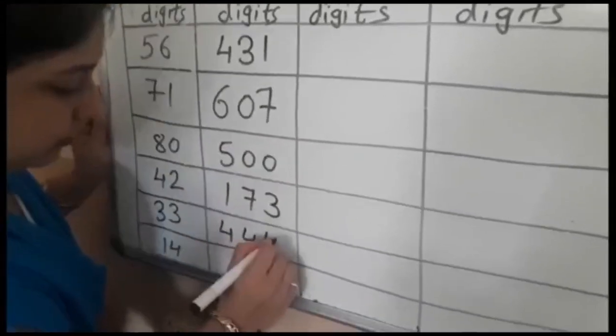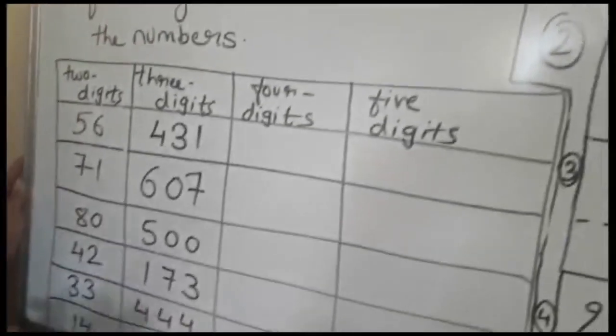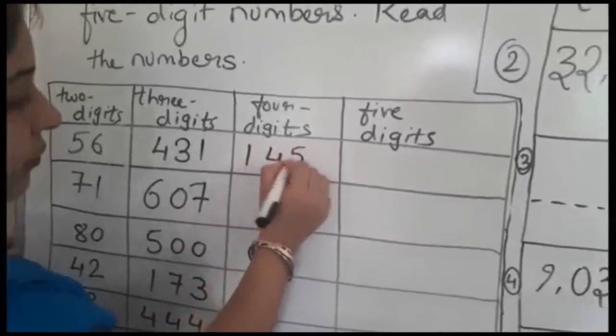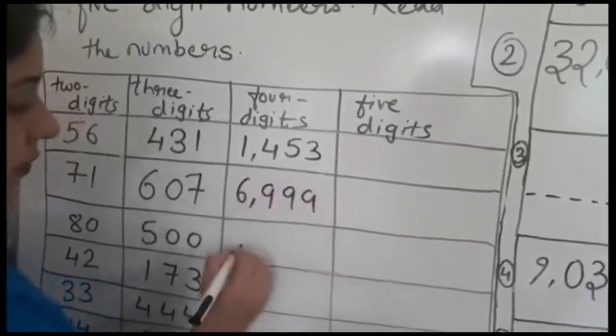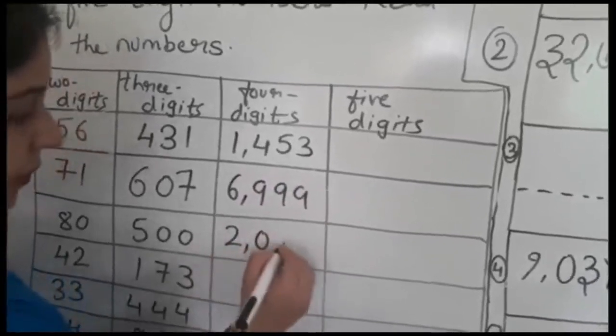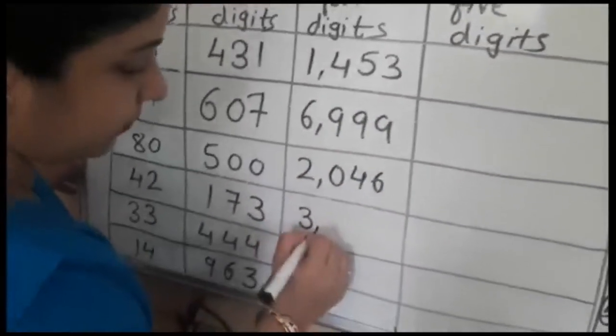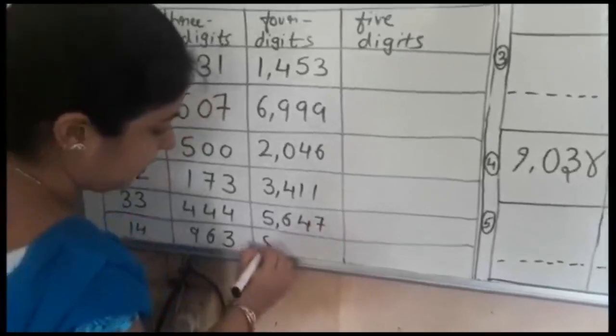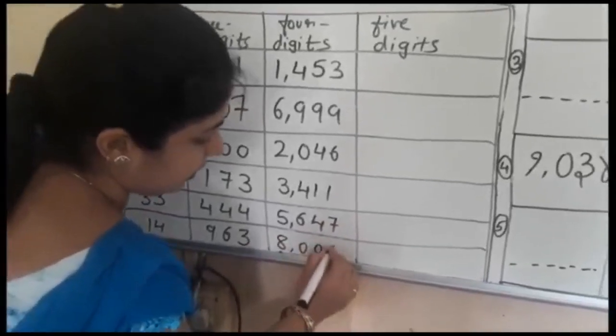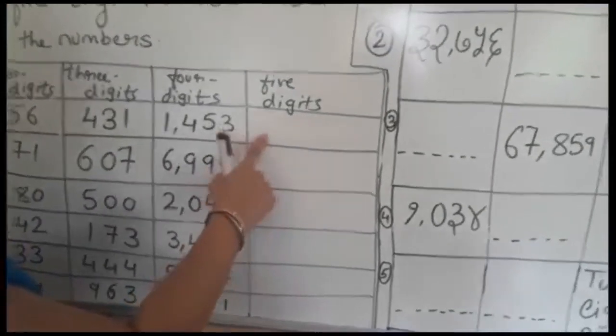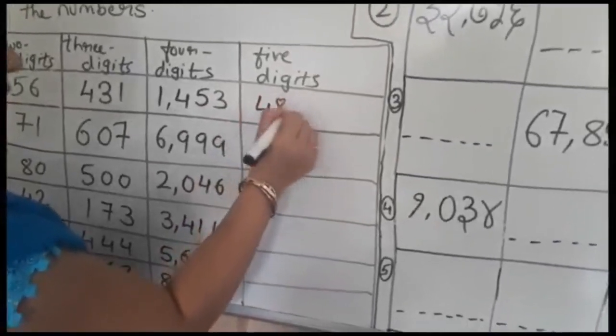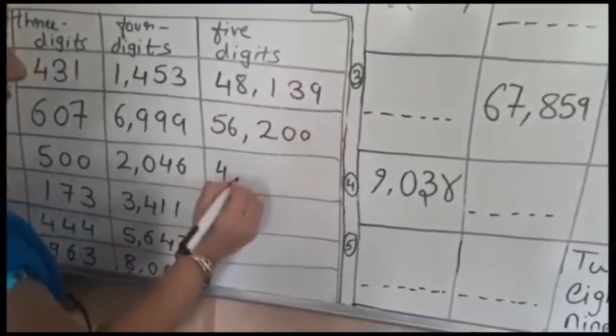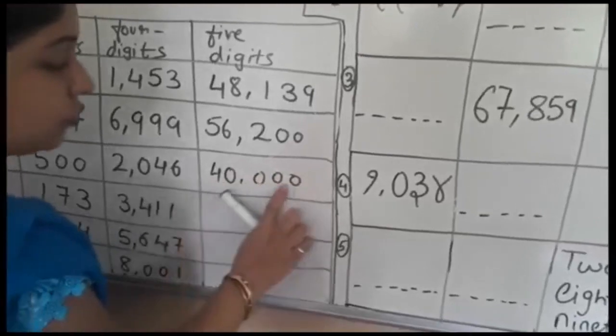Four digit numbers contain four numbers. Here we will start with thousand: 1,453, 6,999, 2,846, 3,411, 5,647, 8,926.